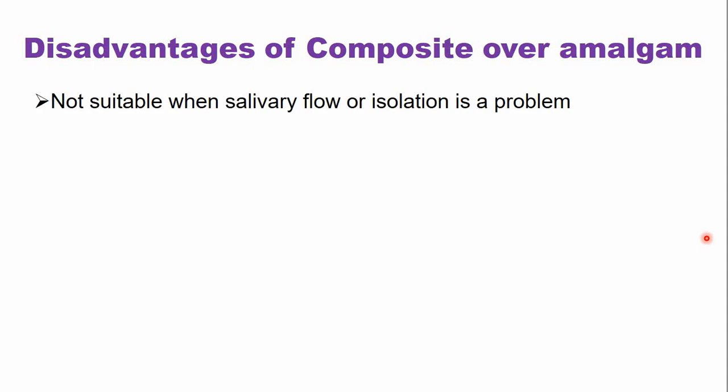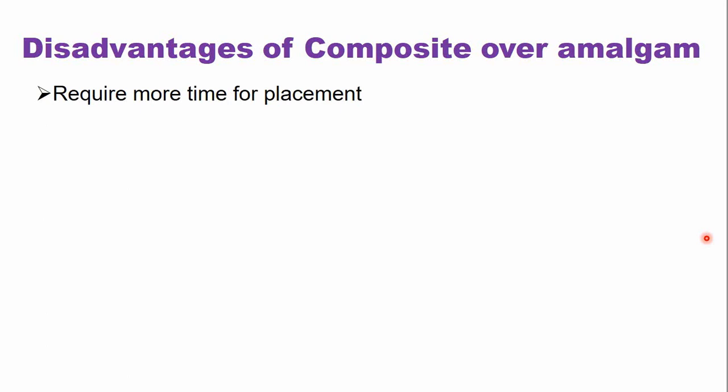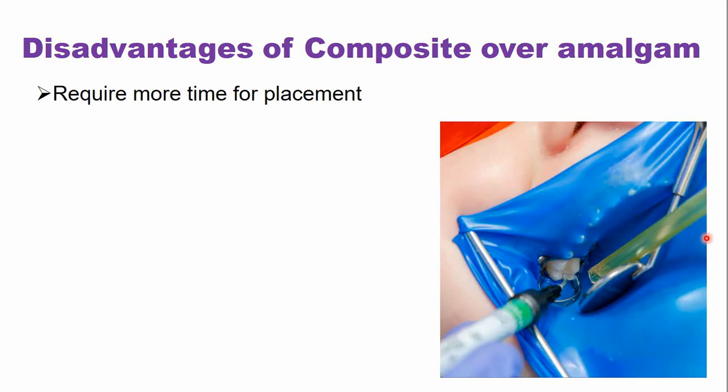What are the disadvantages of dental composites or white fillings over amalgam? They are not suitable when isolation is difficult — for example, in young children where dental dam placement is difficult because children are not cooperative. Another disadvantage is that dental composites require more time for placement because good isolation is required and the composite is placed in increments.